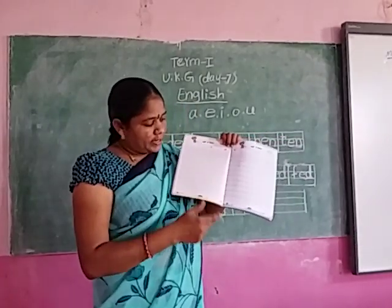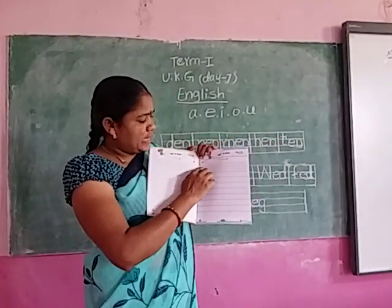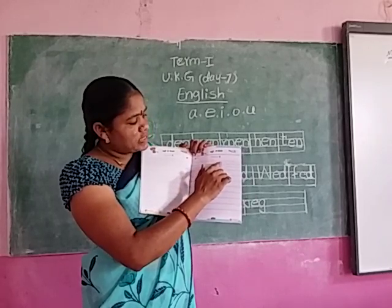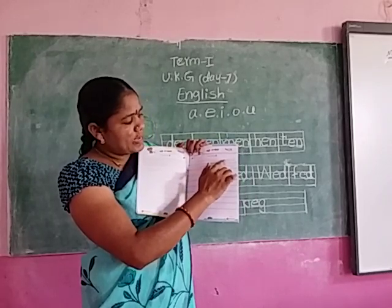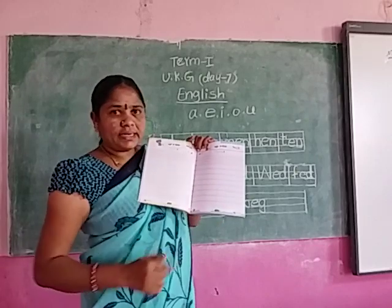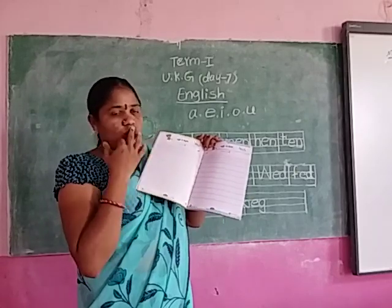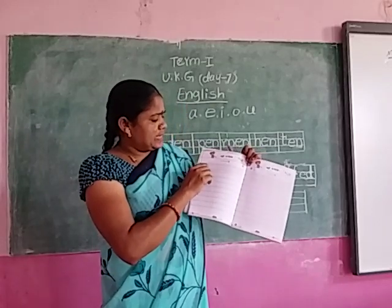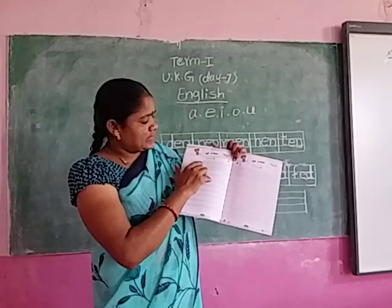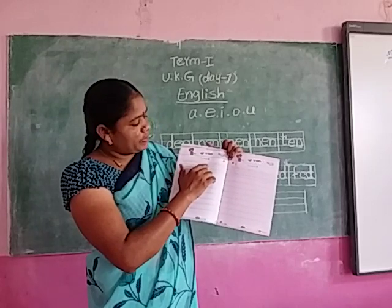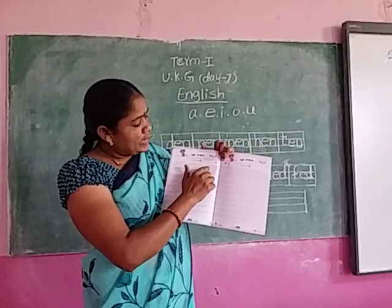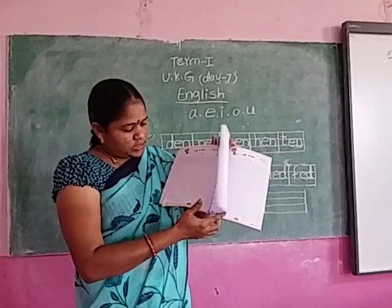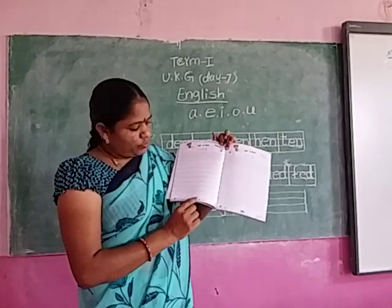Trace here, write down. Next: C-A-N can, V-A-N van, P-A-N pan, F-A-N fan, C-A-N can, R-A-N ran, M-A-N man. Trace here, write down. Next, page number four: S-A-D sad, L-A-D lad, S-A-D sad, B-A-D bad, M-A-D mad, H-A-D had. Page numbers 12, 13, 14.